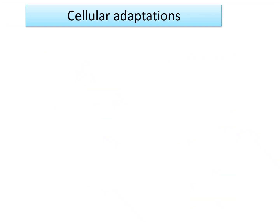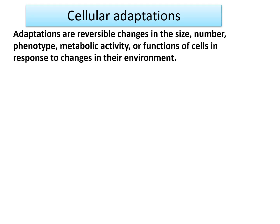Cellular adaptations are reversible changes in terms of size, number, phenotype, metabolic activity or functions of the cells in response to changes in their environment. A normal cell copes with stress by increasing in size, number, phenotype and metabolic activity — that is cellular adaptation.